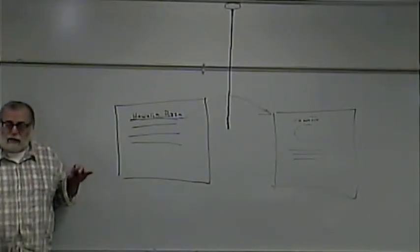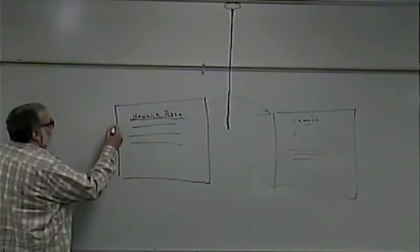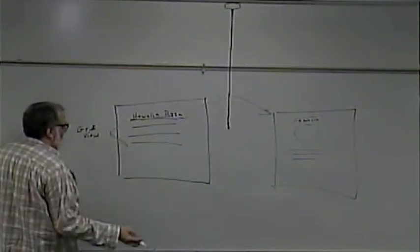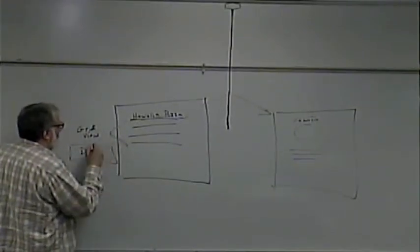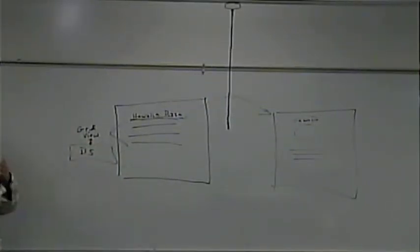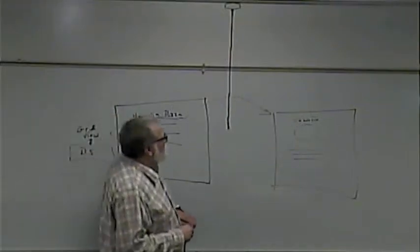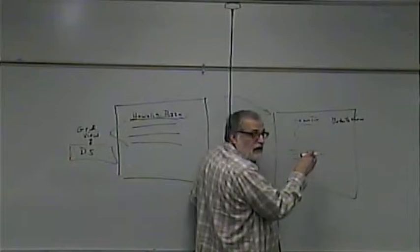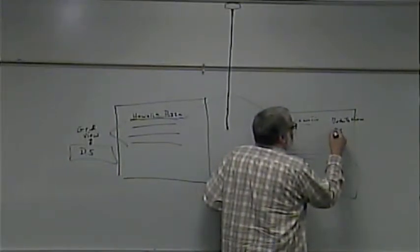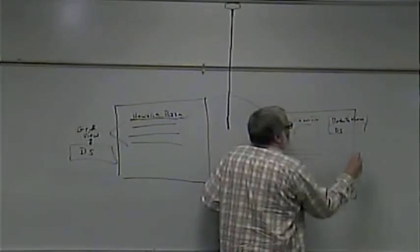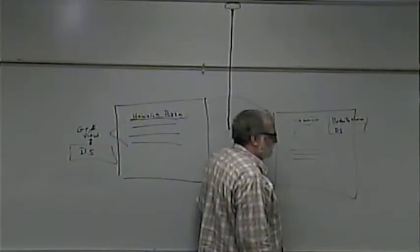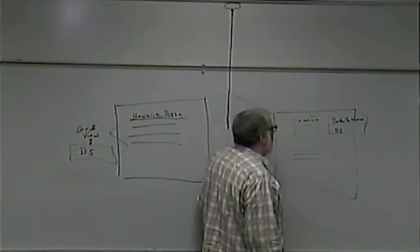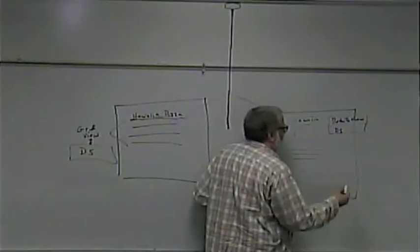We've done a lot of this before. We're just missing a couple pieces. This list page is going to need a grid view and a data source, because any time we display data from a database we have two things: the data component and the UI component. The detail page needs a details view, because we're only showing one thing, plus its own data source.